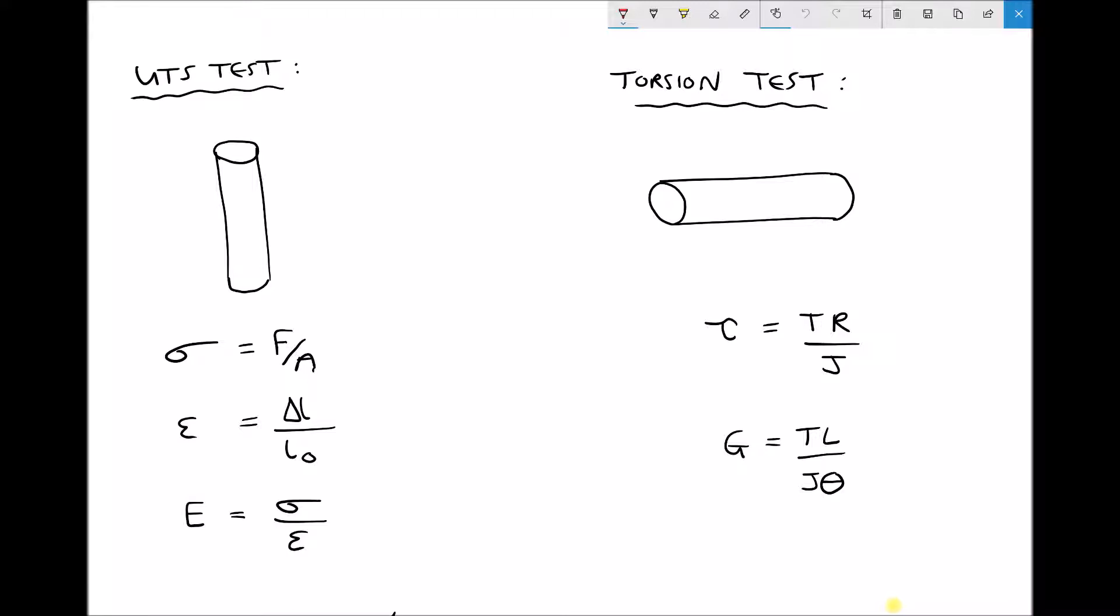First of all, on the left hand side we have a test piece. In a UTS test, one end of that test piece is constrained and at the other end we're going to apply a force that will gradually increase. The stress acting on the test piece equals the applied force over the area, so if we're gradually increasing the force, we're gradually increasing the stress.